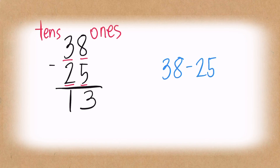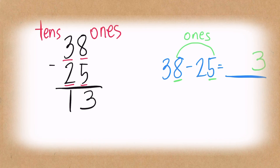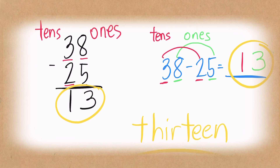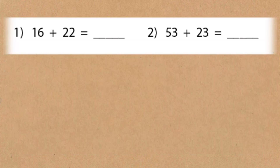Now let's try using the horizontal number sentence: 38 minus 25 is equal to blank, written from left to right. The digits on the right side — eight and five — belong to the ones place, so eight minus five is three. The digits on the left side — three and two — belong to the tens place, so three minus two gives you one. The answer on the vertical number sentence is the same as the horizontal number sentence. The final answer is 13.